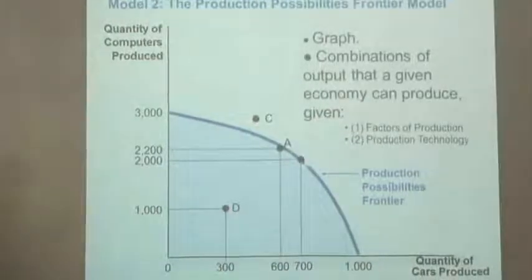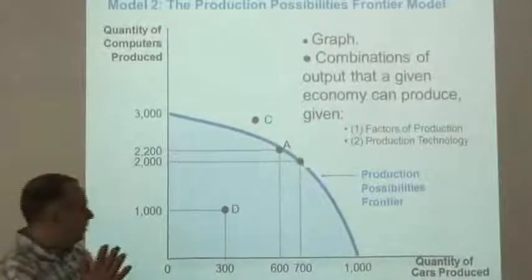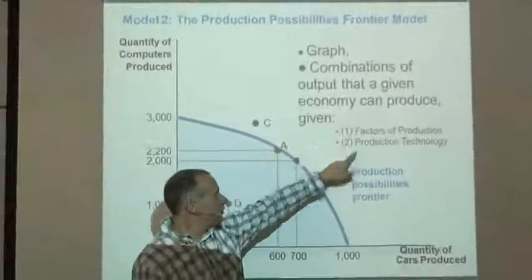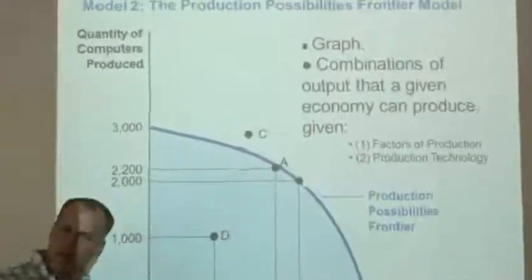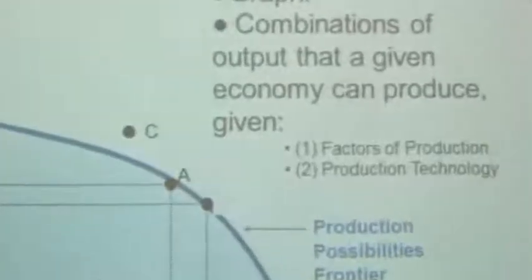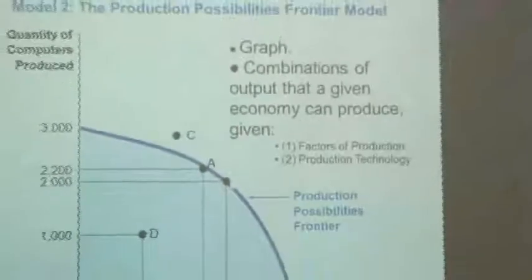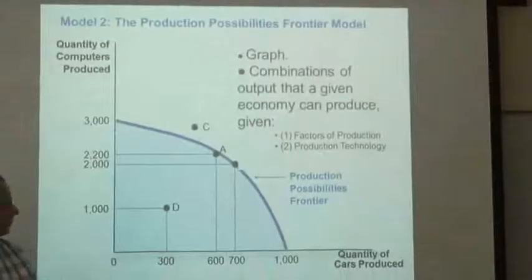Now, it's important to note that the combinations that are represented by the production possibilities frontier depend on two things. The first one is the factors of production. How much land, labor, and capital do we have in the economy? How many workers, how many households are supplying their factors of production?